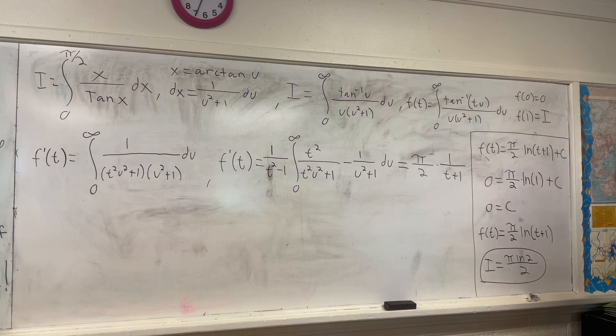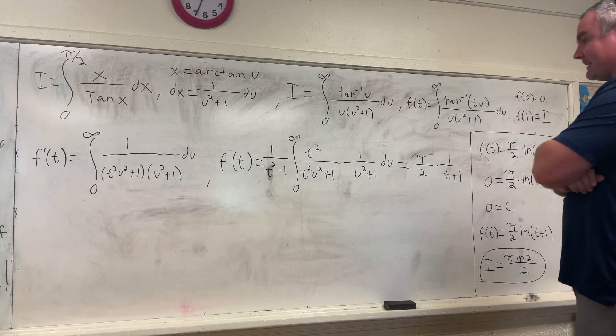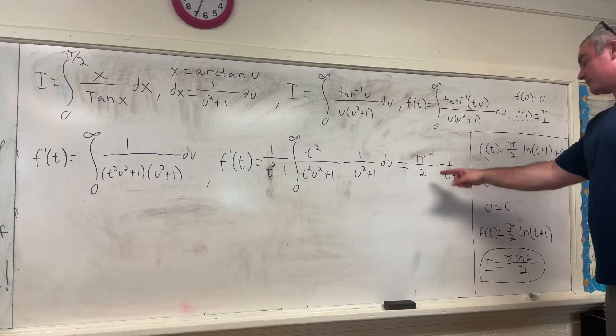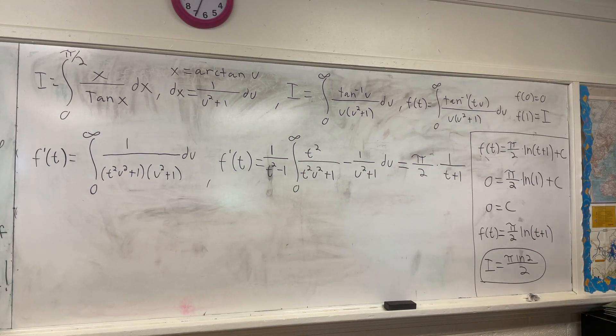If you evaluate that, which again, it's messy, but definitely doable using first and second semester calculus techniques, you'll get that f prime of t is equal to pi over 2 times 1 over t plus 1. And now we're ready to finish off the problem.